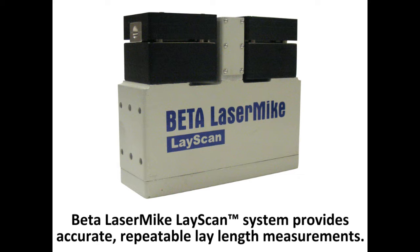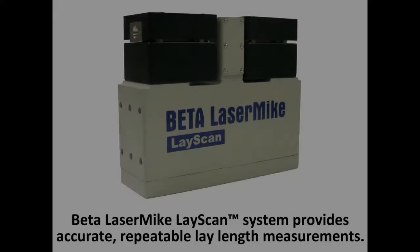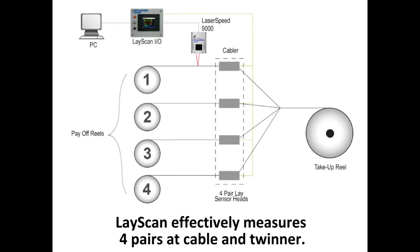With the focus on producing higher quality cable in less time and at lower cost, the patented Beta LaserMic LayScan measurement system offers manufacturers an accurate and consistent method to measure the lay length of twisted pairs. The LayScan system enables manufacturers to simultaneously measure four pairs at the cabler or twinner to confirm the accuracy of twisted pair cable construction during production.